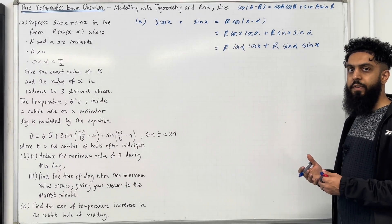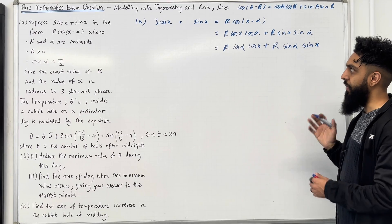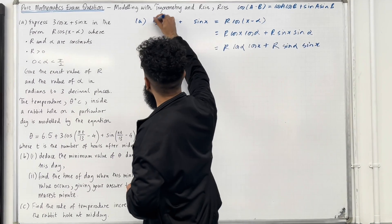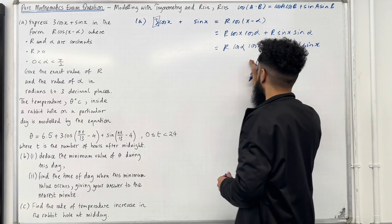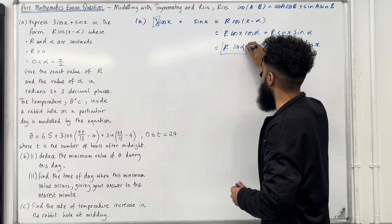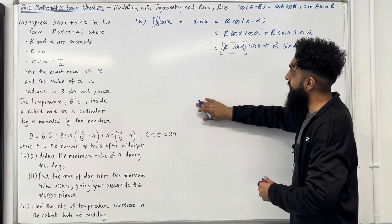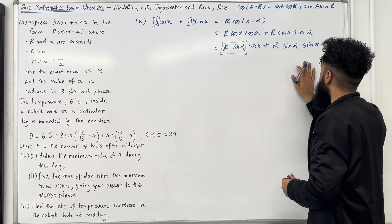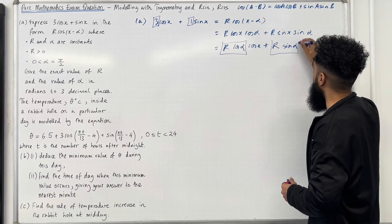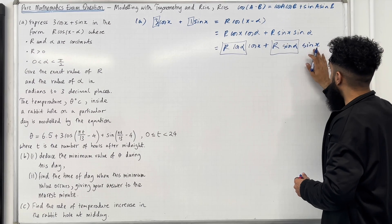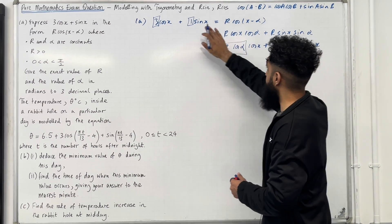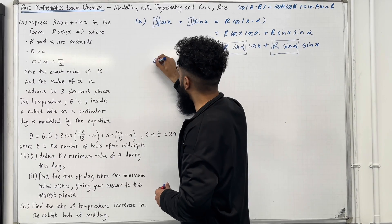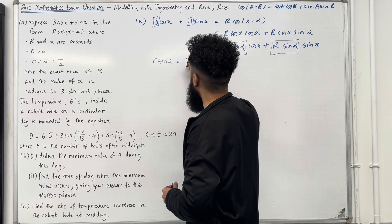Now I'm going to compare the coefficients of cos x and sin x on the left and right hand side. On the left hand side the coefficient of cos x is 3, and on the right hand side it is r cos alpha. The coefficient of sin x on the left is 1, and on the right is r sin alpha. So r sin alpha equals 1.